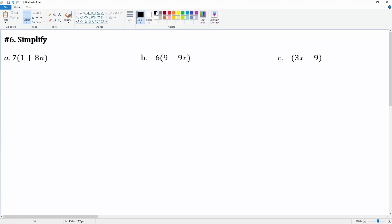Number six asks you to simplify. There's a number in front of parentheses, so we need to distribute. You have 7 times 1, and then 7 times 8n. I color code it so you can see what is being distributed. 7 times 1 is 7, plus 7 times 8n, which is 56n.